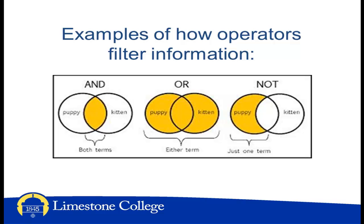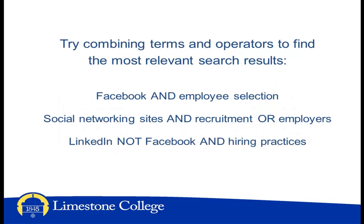The Boolean operator OR makes your search broader. Performing a search with two terms linked by OR ensures that you will retrieve results that have either keyword present. NOT is the third option for linking your search terms. NOT excludes words or phrases in your search. By placing NOT before a word, such as PUPPY NOT KITTEN, it ensures that your results will exclude any articles containing the word KITTEN. This is a good strategy to use when you have narrowed your search and want to avoid finding articles that are close to your topic but not an exact match. Try combining terms and operators to find the most relevant search results.